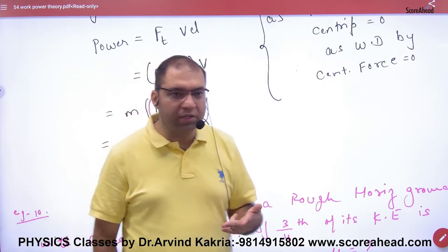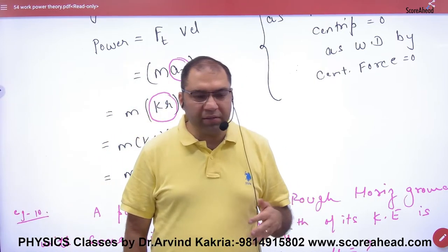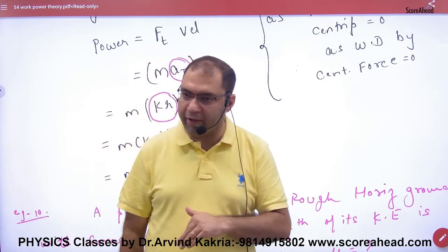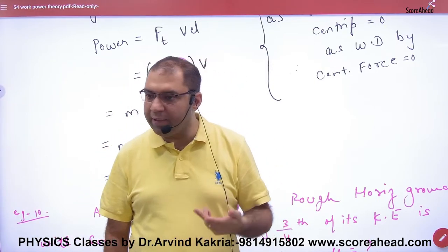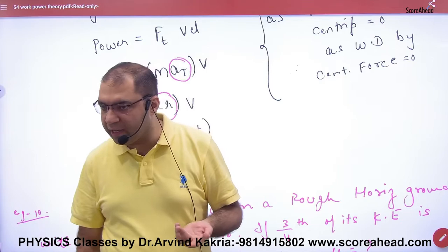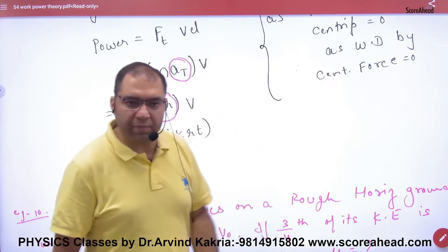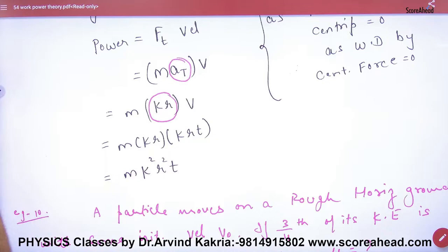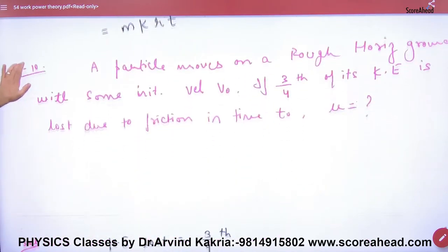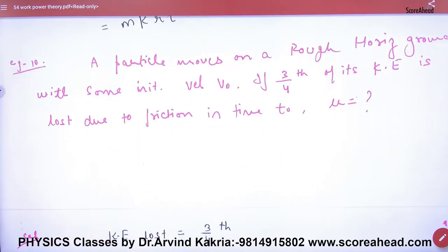Because there are two forces — centripetal and tangential — centripetal force does no work and its power is zero. Tangential force gives the power using Power = Force × velocity. So we mark this option. This is an objective sheet problem; not for NCERT.